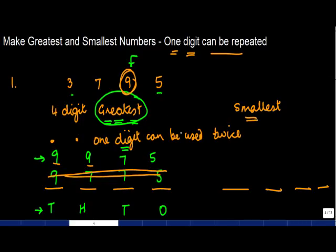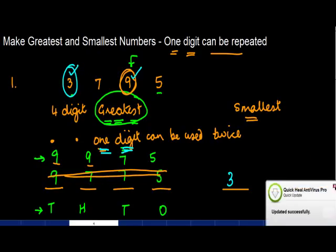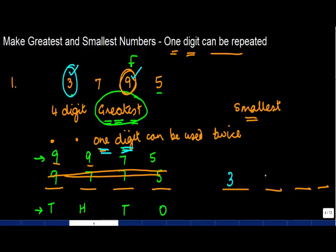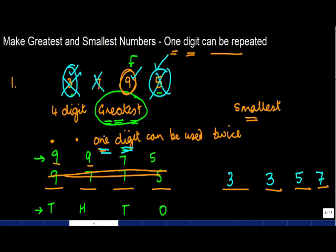Now let's create the smallest number. You are again allowed to use one digit twice. When making the smallest number, we keep the smallest digit on the left. The smallest digit here is three. Since I have to create the smallest number, I will use the digit with the smallest value — three — twice. Once I've used three twice, I cross it out. Then from the remaining digits seven, nine, and five, the smallest is five, followed by seven. So the smallest number is 3357.